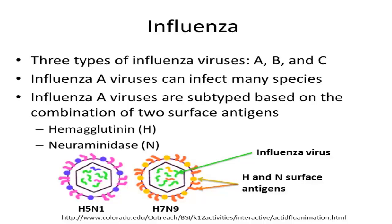There are two different types of surface antigens. One is the hemagglutinin antigen, commonly referred to as H, and the second is the neuraminidase antigen, commonly referred to as N. There are 18 H antigens and 11 N antigens, and many different combinations of these antigens are possible. The combination of the H and N antigens is what gives the virus its subtype name.